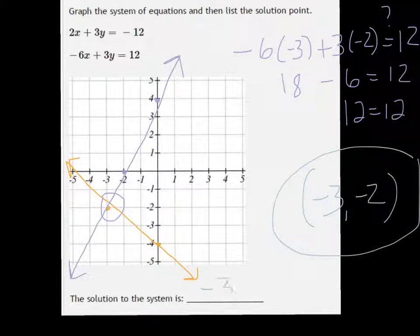Oh, this is where it goes, at the bottom. So just put negative 3, negative 2.